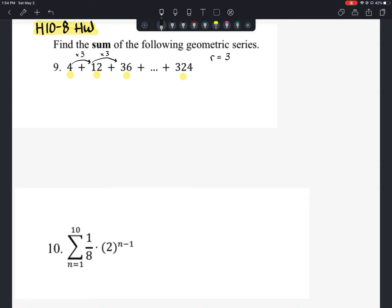And for the sum of a geometric series, we know that we need to know what the first term is, which is 4. And we need to know the number of terms. And I think that's missing right now.